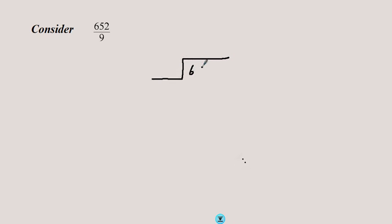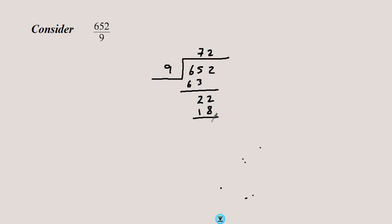Moving on, let's consider long division in numbers. We write 652 divided by 9. Starting from the left, 65 divided by 9 is 7. 7 times 9 is 63, so we have a remainder of 2. We subtract to get 2, then bring this 2 down. 22 divided by 9 gives us 2 nines, but then we have a remainder of 4.